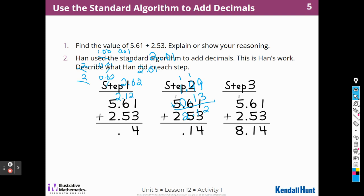Let's get rid of my work and see what we're going to work with now. Find the value of 5.16 plus 2.53. Explain or show your reasoning. Hahn used the standard algorithm to add the decimals. This is Hahn's work. Describe what Hahn did in each step.